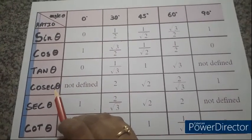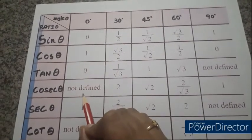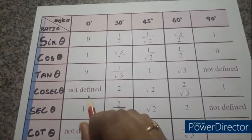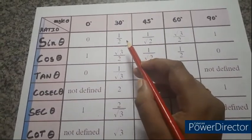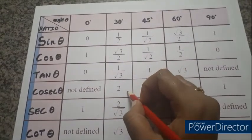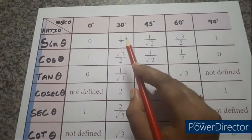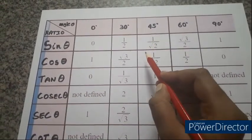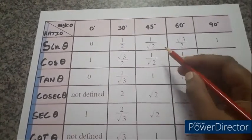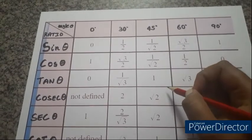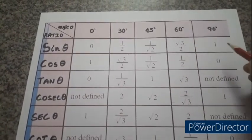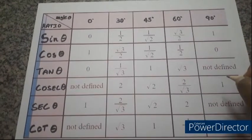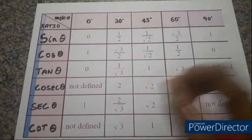Cosec theta is the inverse of sin theta. Cosec 0° is not defined (1/0 = infinity). Cosec 30°: inverse of 1/2 is 2 — the numerator goes to denominator and denominator goes to numerator. Cosec 45°: inverse of 1/√2 is √2. Cosec 60°: inverse of √3/2 is 2/√3. Cosec 90°: inverse of 1 is 1.